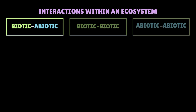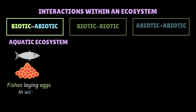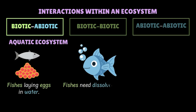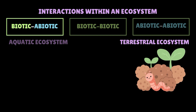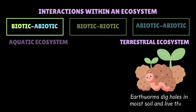In an aquatic ecosystem, fishes laying eggs in water are biotic components interacting with abiotic ones. Another example would be fish needing dissolved oxygen in water to breathe. In a terrestrial ecosystem, earthworms dig holes in moist soil and live there — so earthworms, a biotic component, are dependent on soil, which is an abiotic component, for their survival.